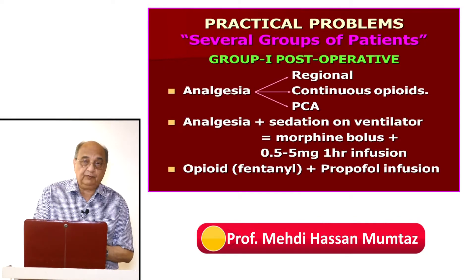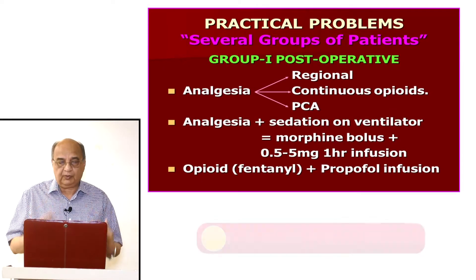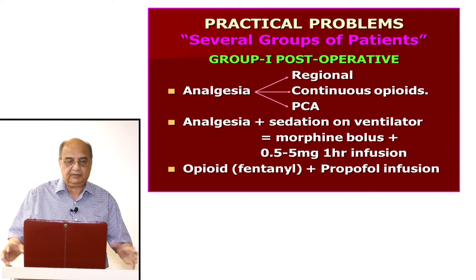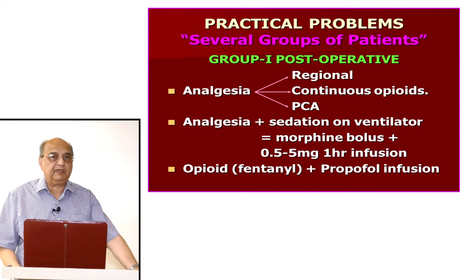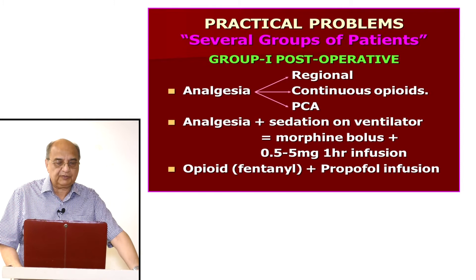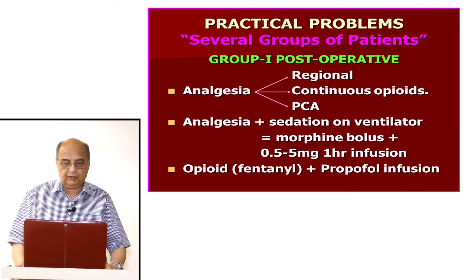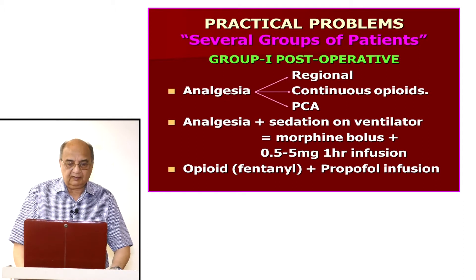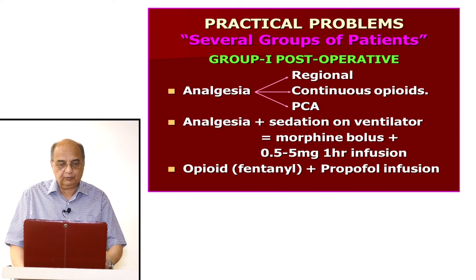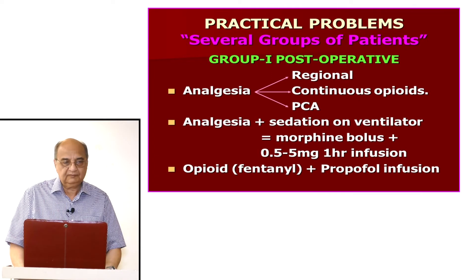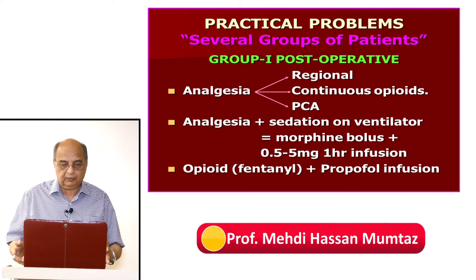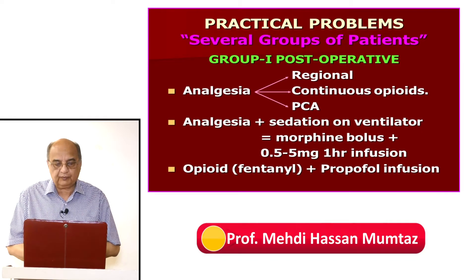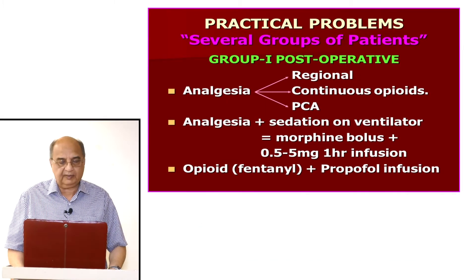Practically, we divide patients who require sedation into different groups. Group one is post-operative patients. These patients may have analgesia — regional, continuous, or patient-controlled analgesia. For patients on the ventilator who require both analgesia and sedation, the best approach is morphine: a bolus plus a 0.5 to 5 milligram per hour morphine infusion, given continuously since morphine also has a sedative effect.